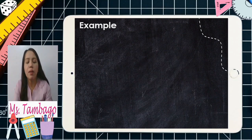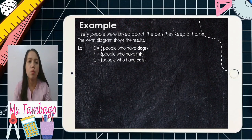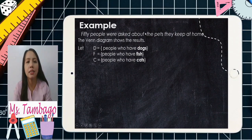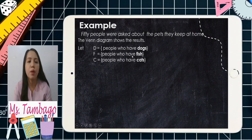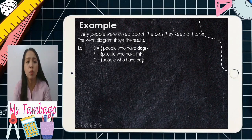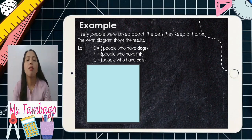This next one is a little bit more complicated. 50 people were asked about the pets they keep at home. Let's use a Venn diagram: Set D for people who have dogs, F for fish, and C for cats. So in this case, we're going to use 3 circles.